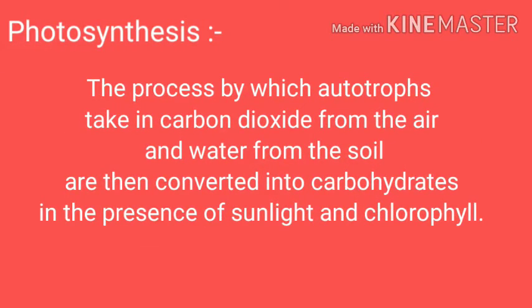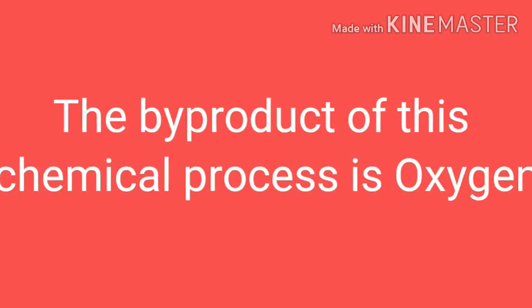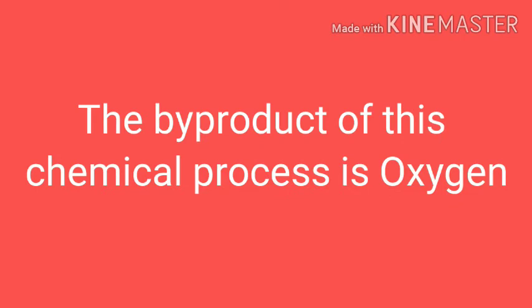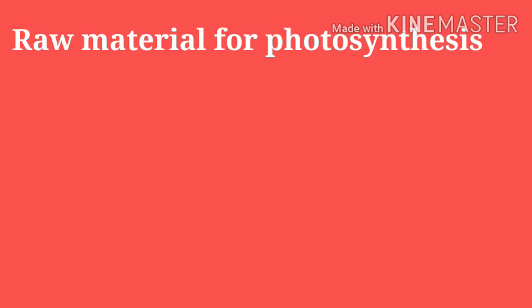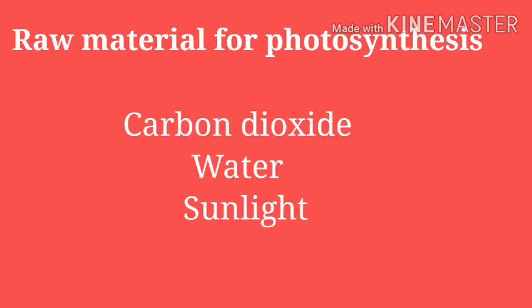The process by which autotrophs take in carbon dioxide from air and water from the soil, which are then converted into carbohydrates in the presence of sunlight and chlorophyll, is called photosynthesis. The byproduct of this biochemical process is oxygen. The main raw materials required for photosynthesis are carbon dioxide, water, and sunlight.